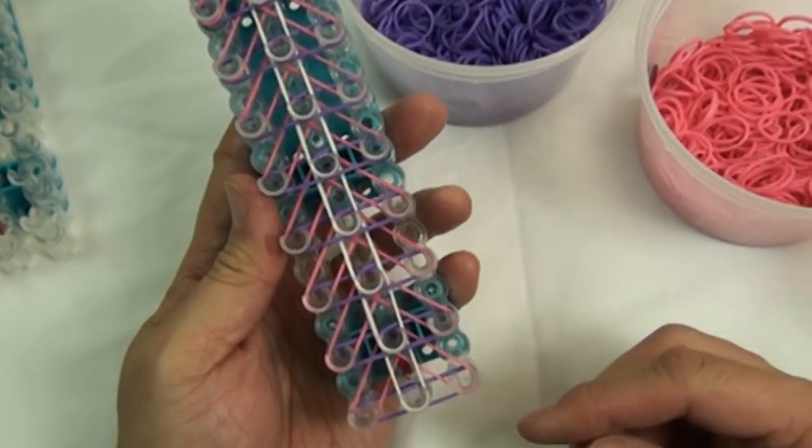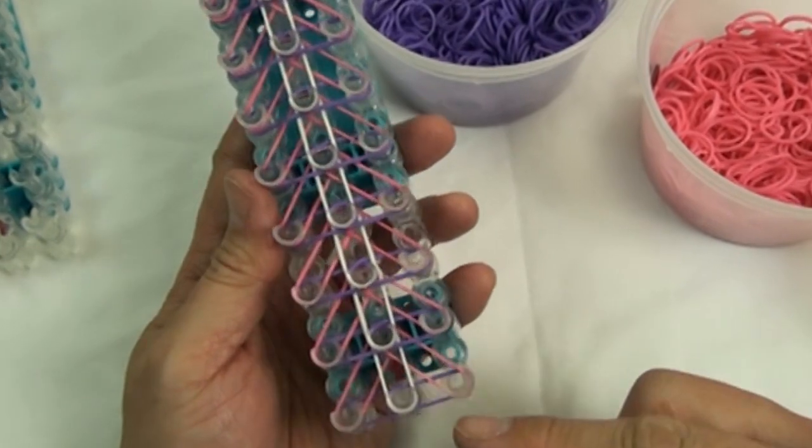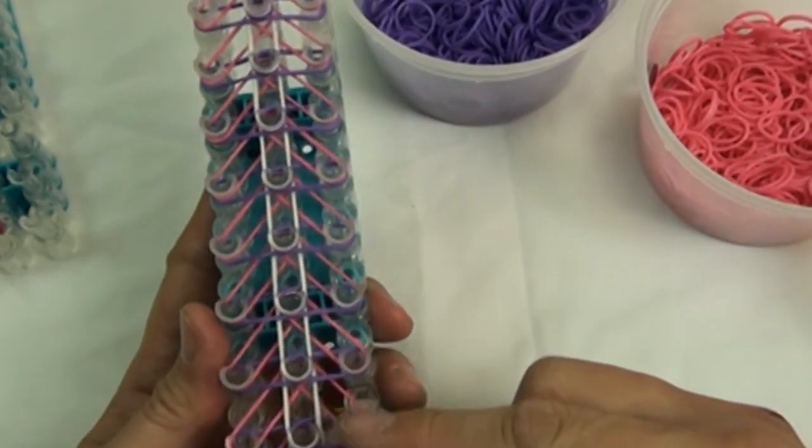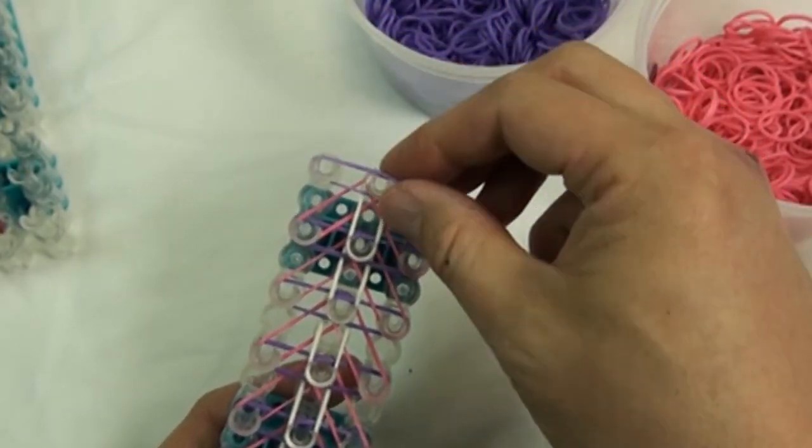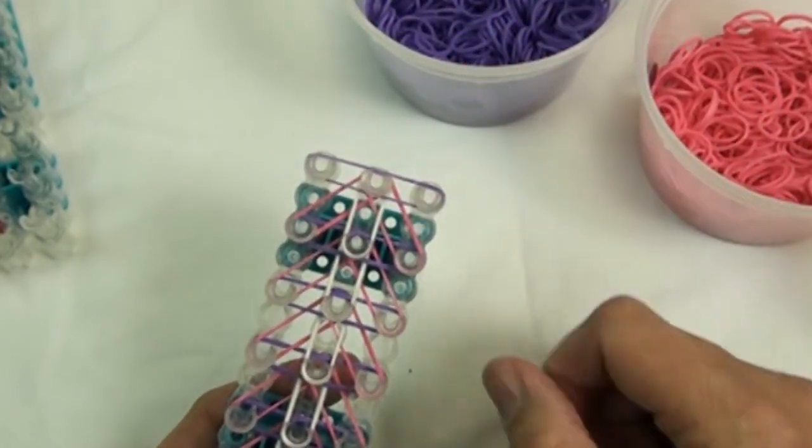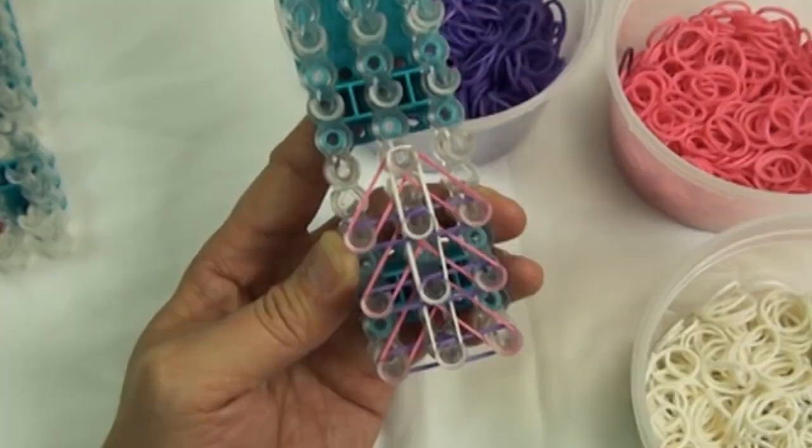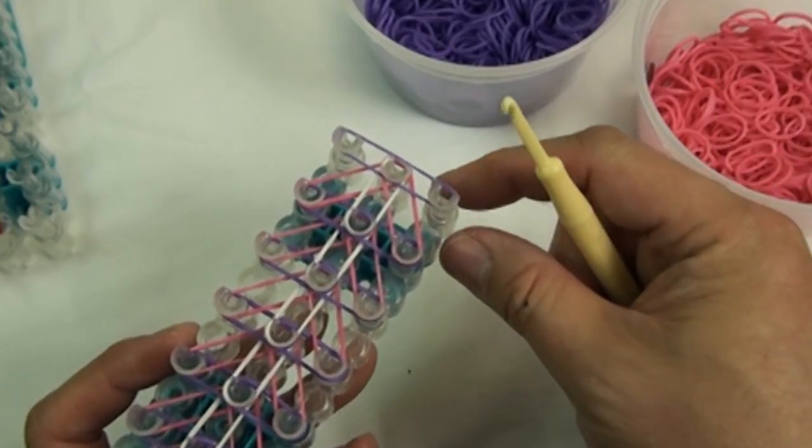Once you are done, the rubber band on the template should look like this. On the last pin we'll put the rubber band. Turn the template around.